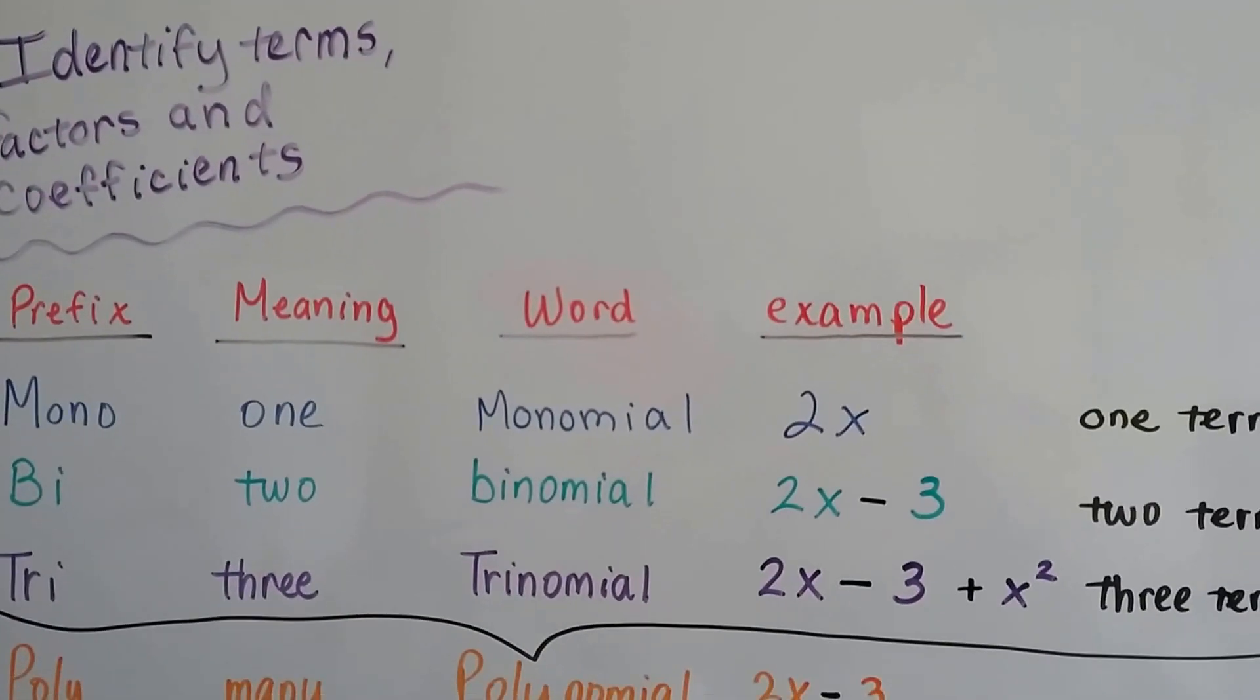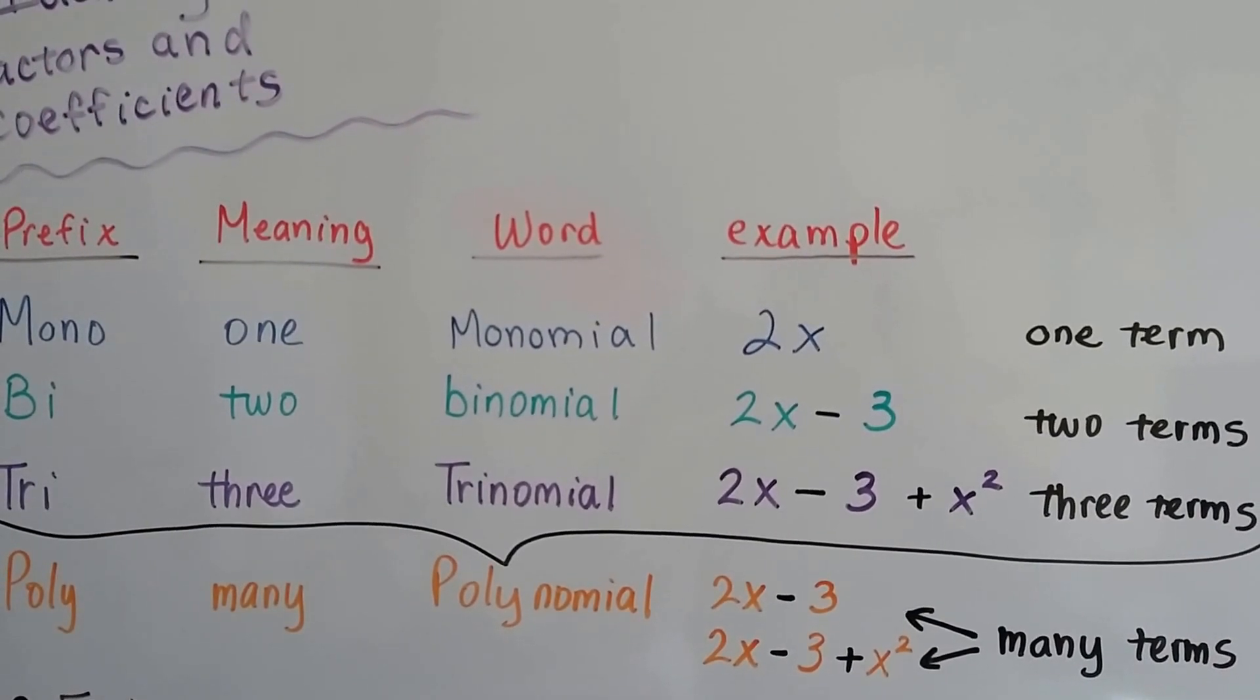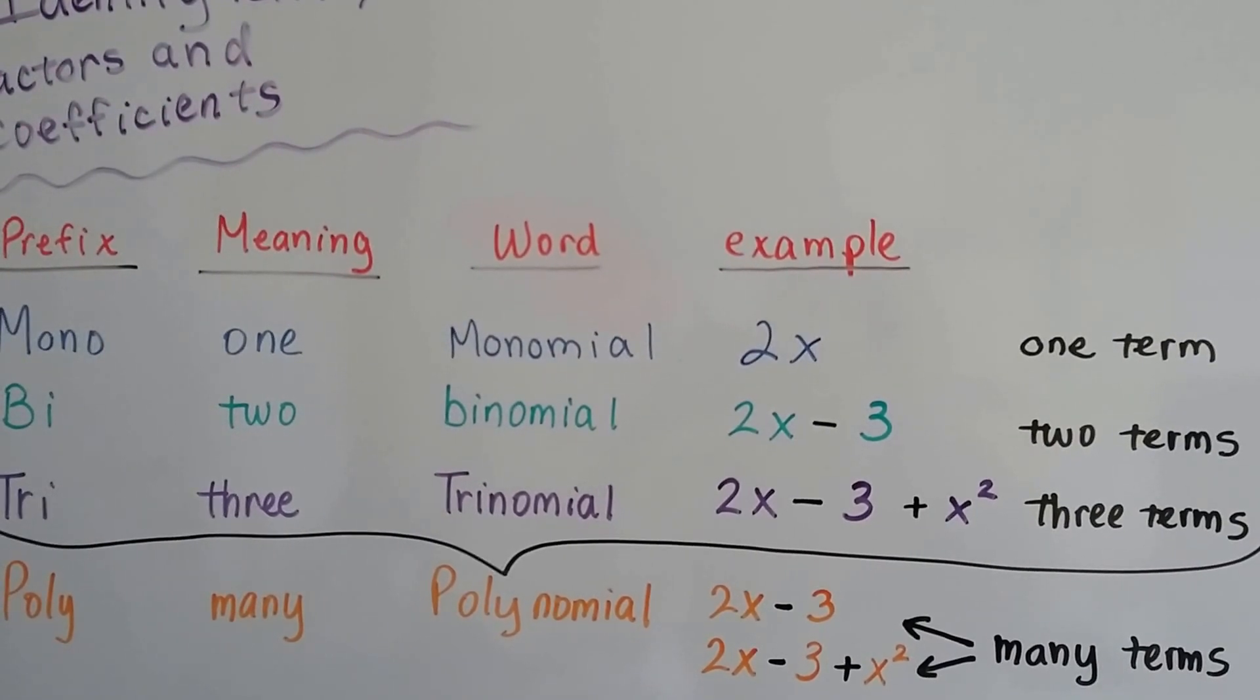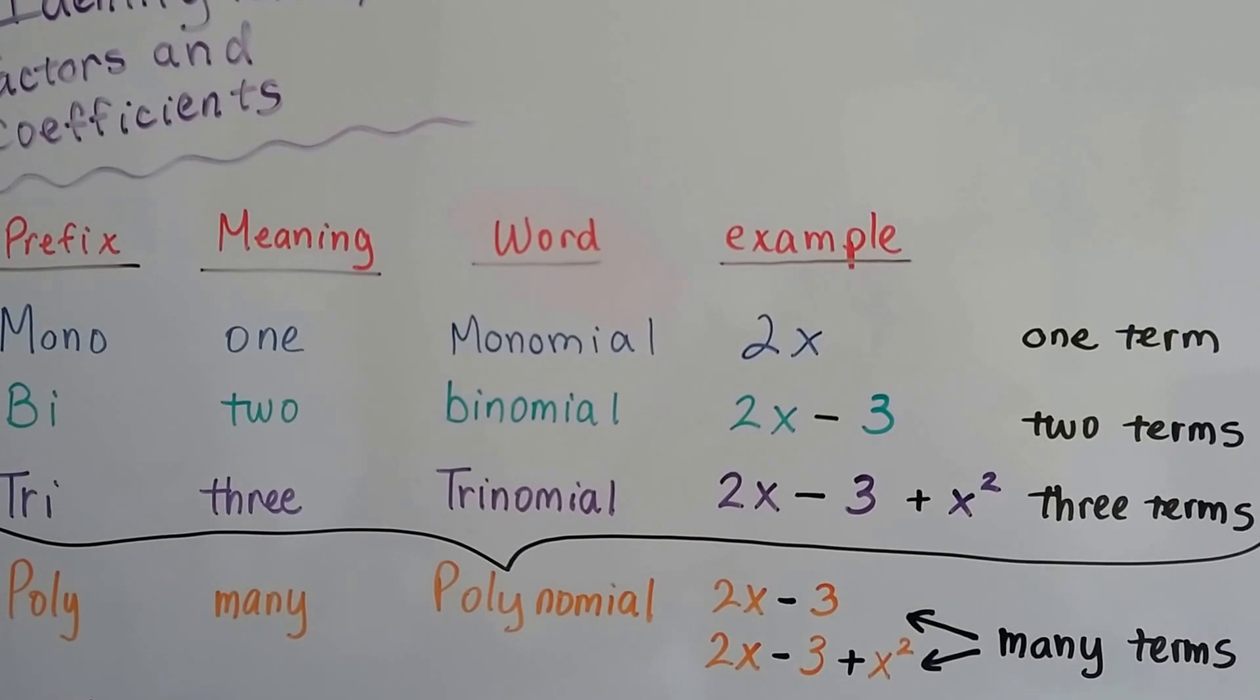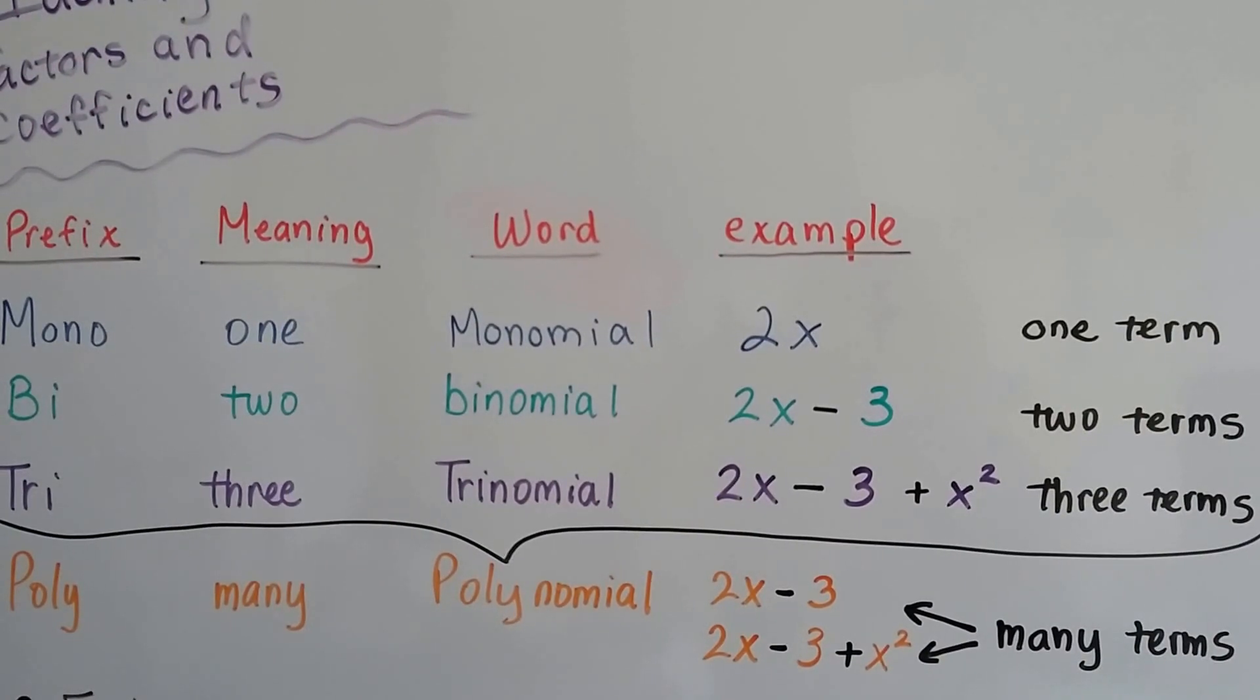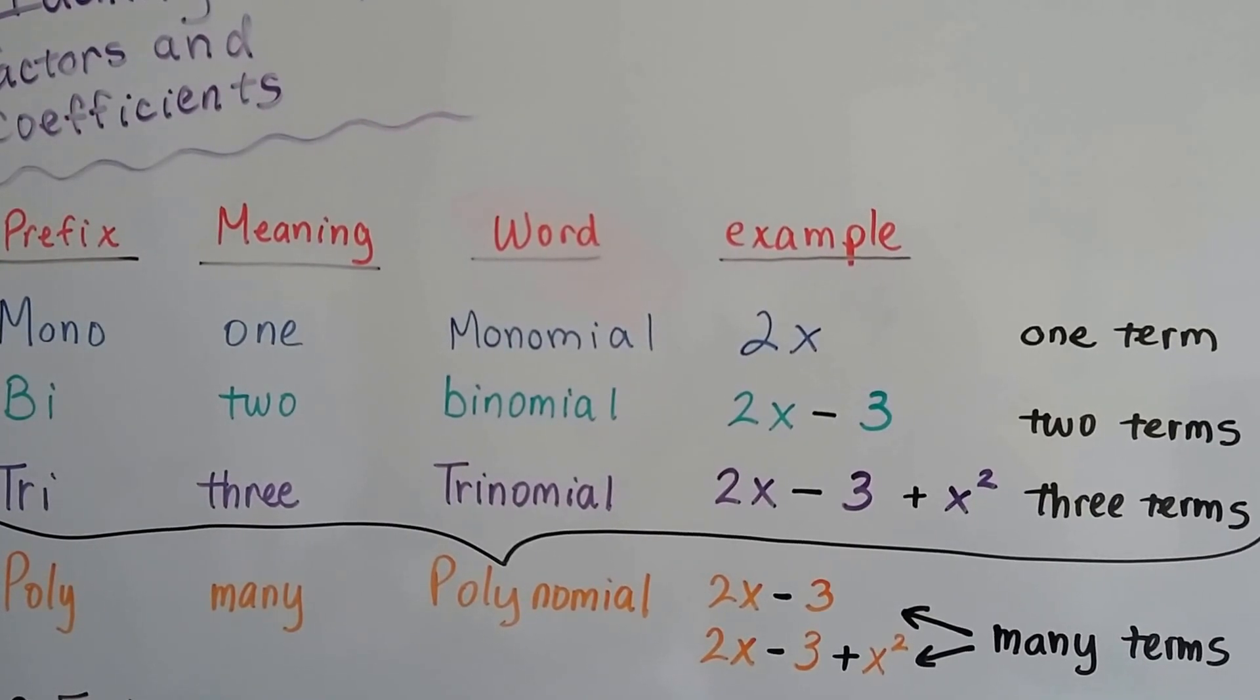We have the prefix, the meanings, the words, and some examples here. We've talked about monomials. Mono is a prefix meaning one, so a monomial has one term. Bi is a prefix meaning two, so a binomial has two terms. Tri is a prefix meaning three, so a trinomial has three terms. And poly means many, so polynomials are all of these. They're all monomials, binomials, trinomials.